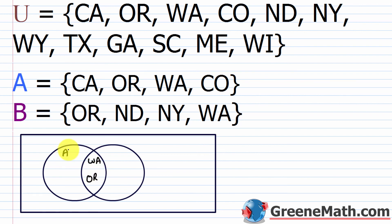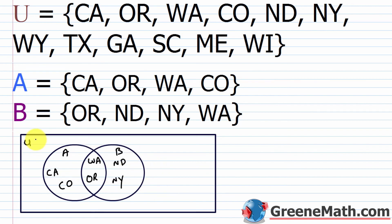For set A, California and Colorado go in A's side. For set B, North Dakota and New York go in B's side. Outside both circles but inside set U, we place Wyoming, Texas, Georgia, South Carolina, Maine, and Wisconsin.